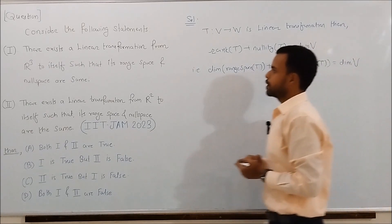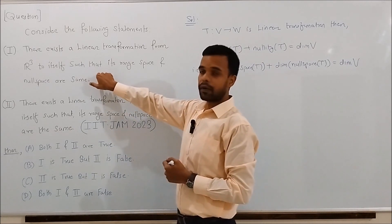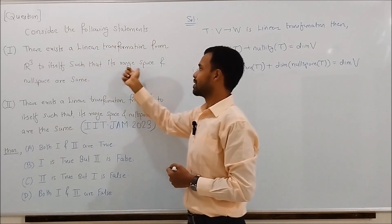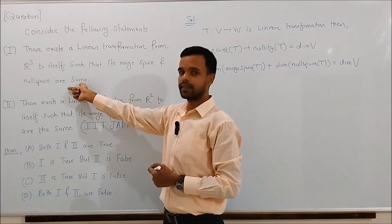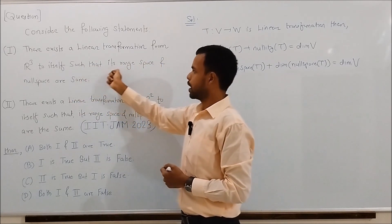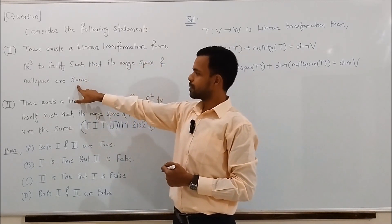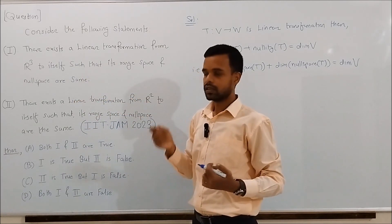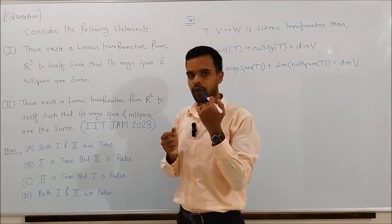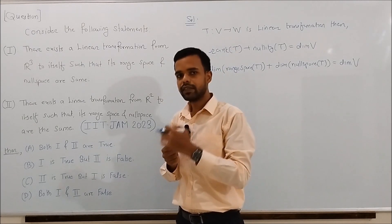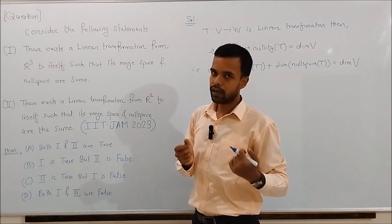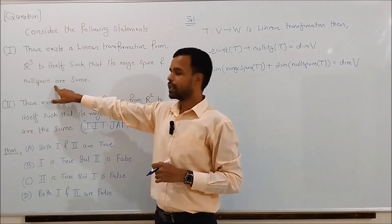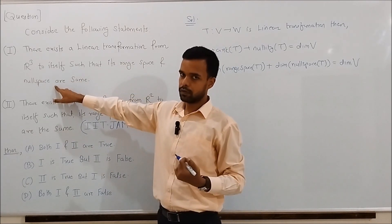Now, if Statement 1 is true — that is, there exists a linear transformation from R3 to itself such that its range space and null space are the same — then both range space and null space have the same dimension. So if dimension of range space is 1, then dimension of null space is also 1; if dimension of range space is 2, then dimension of null space is also 2.